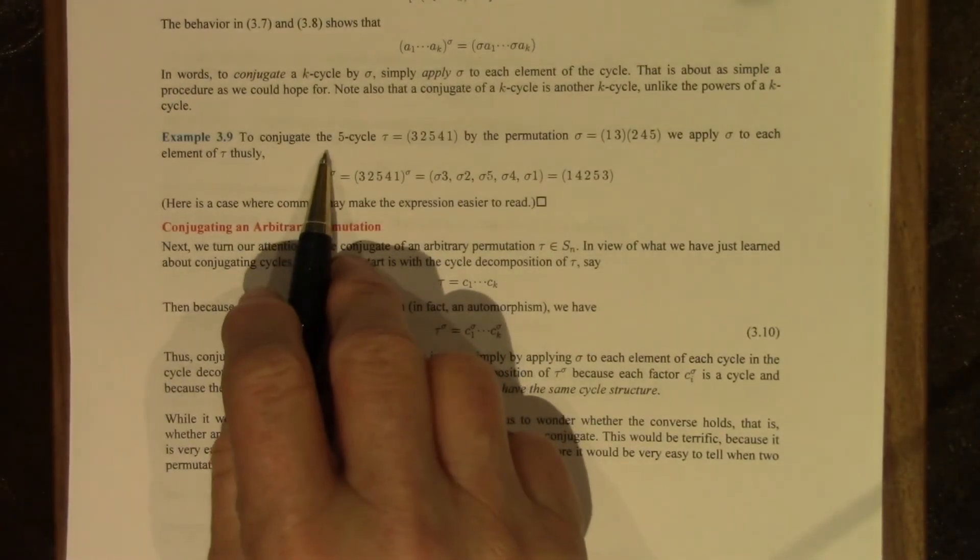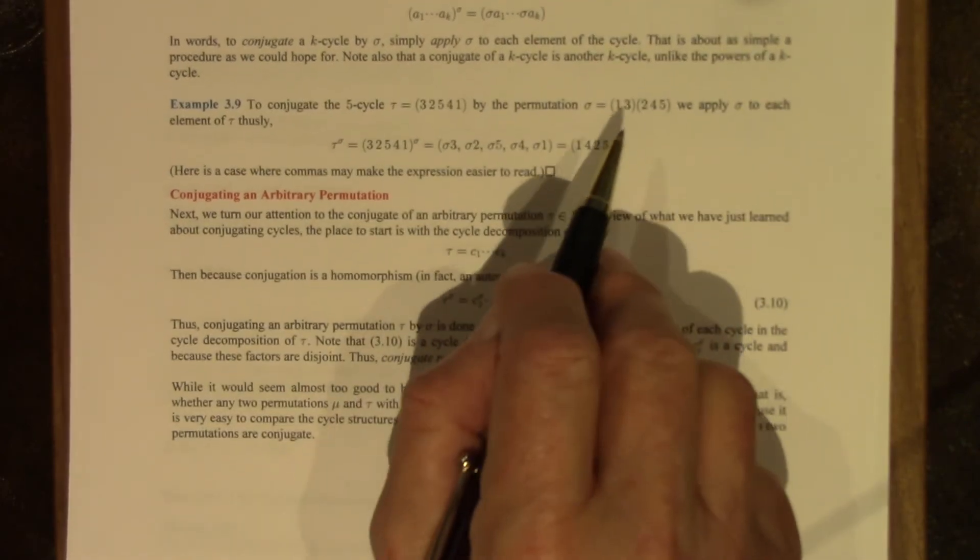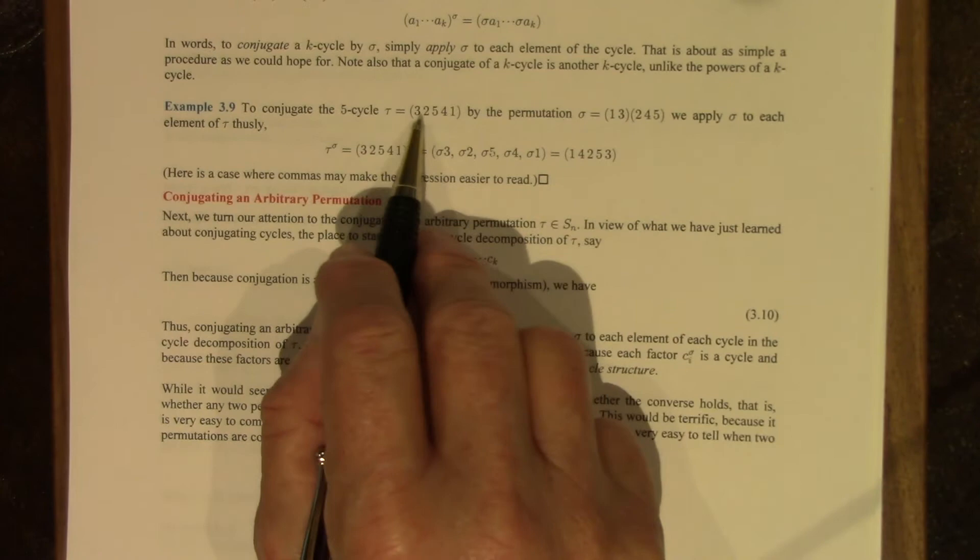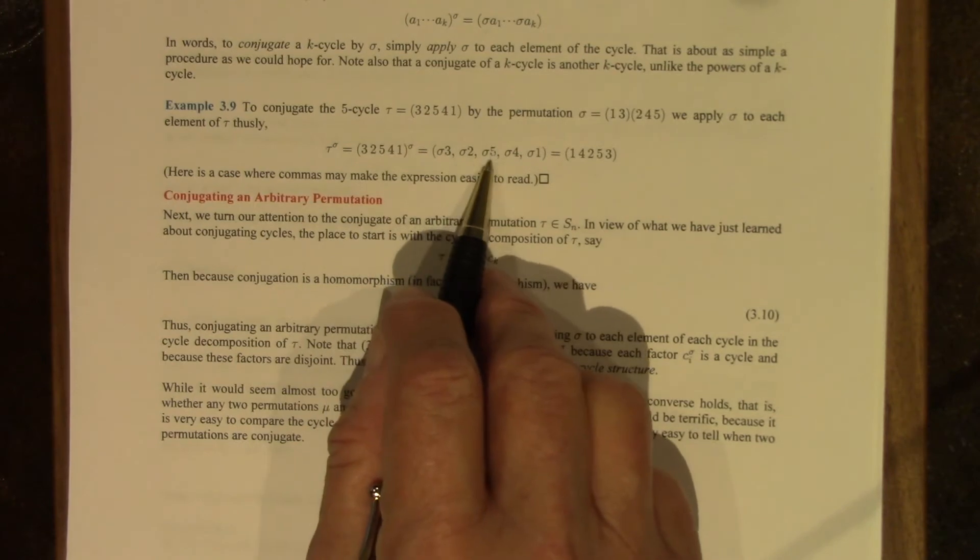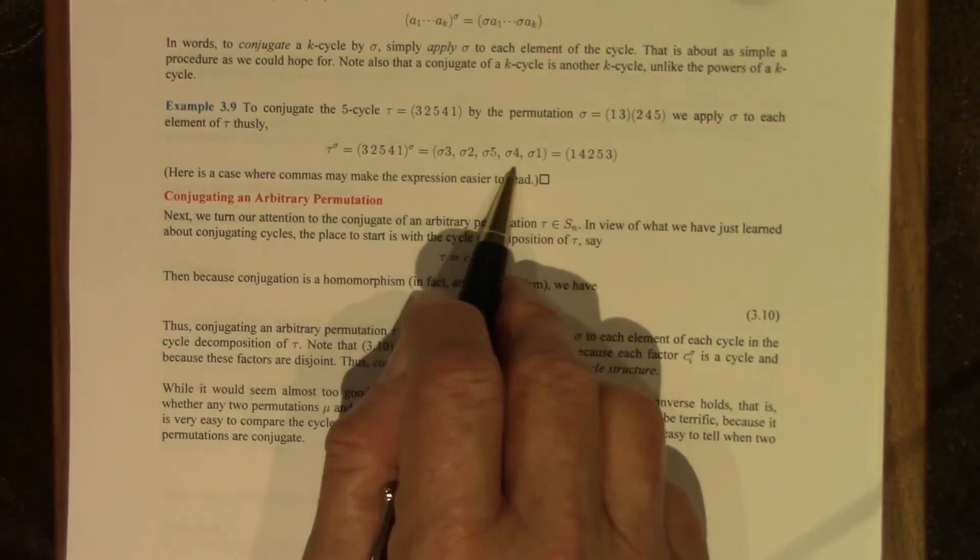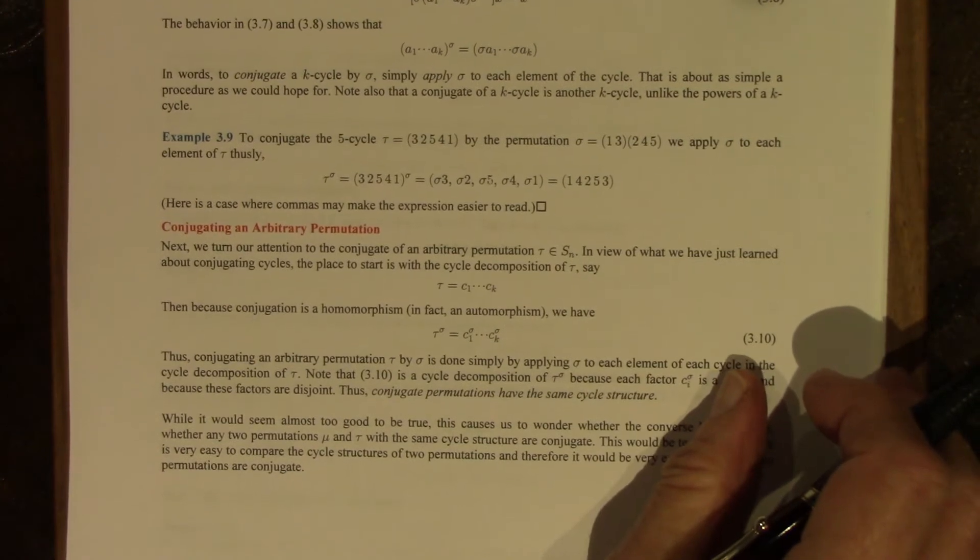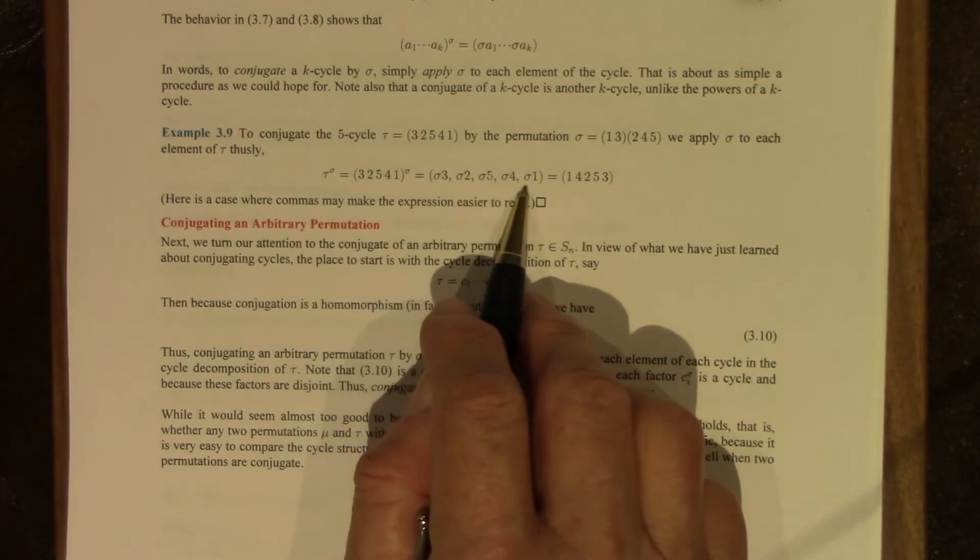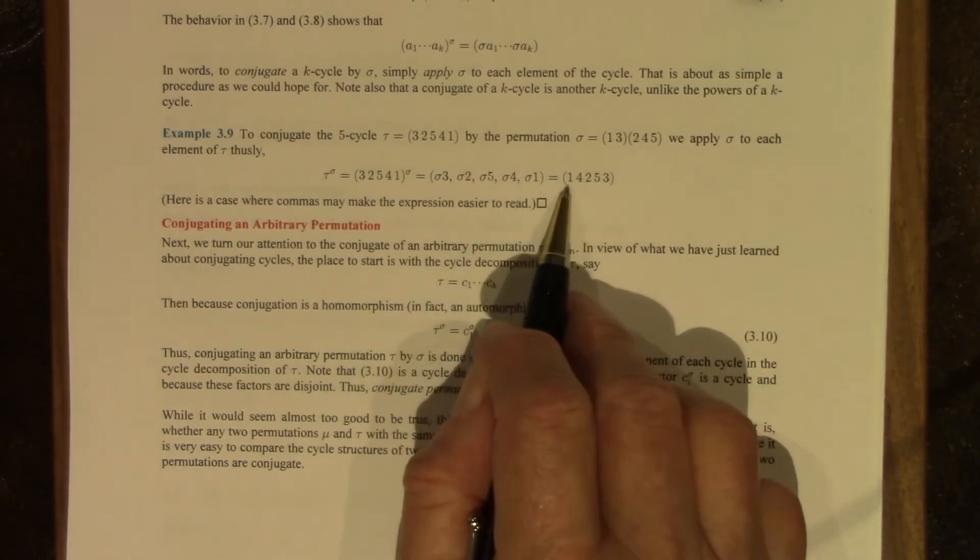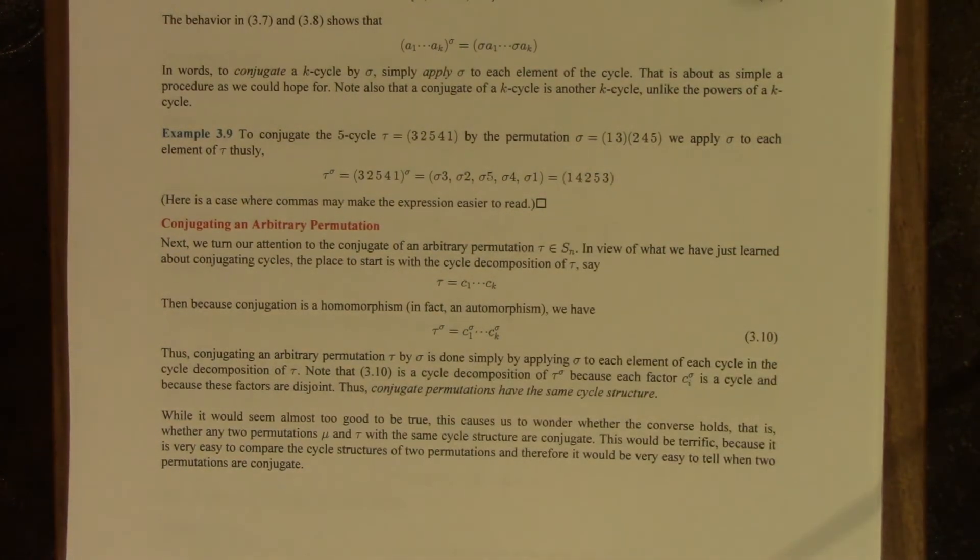So here's an example. This is a 5 cycle. We want to conjugate it by this permutation. All we do is apply this permutation to each of these elements. Sigma 3, sigma 2, sigma 5, sigma 4, sigma 1. And here's a good place for commas. It kind of makes it easier to read. I could use wider spaces, but I wanted to show you how it looks with commas. So this is not an ordered 5-tuple. It is a 5 cycle. And it's this 5 cycle. So we know how to conjugate a cycle. Very simple.